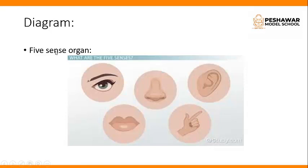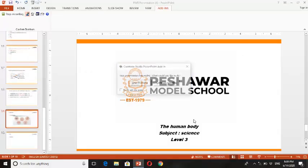Then there is a diagram of 5 sense organs — eye, nose, ear, mouth, and hand — which you should draw in your copy. This is the end of the chapter. Thank you.